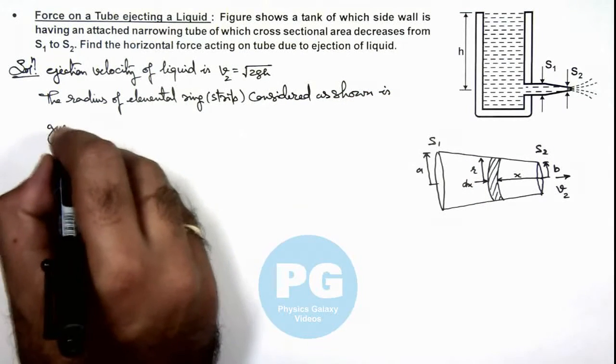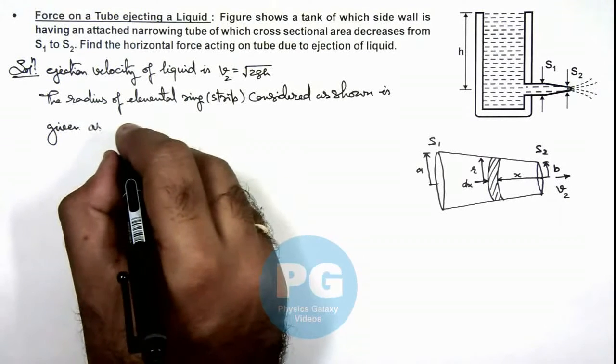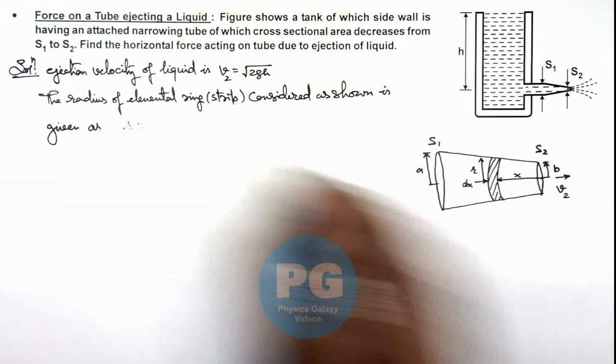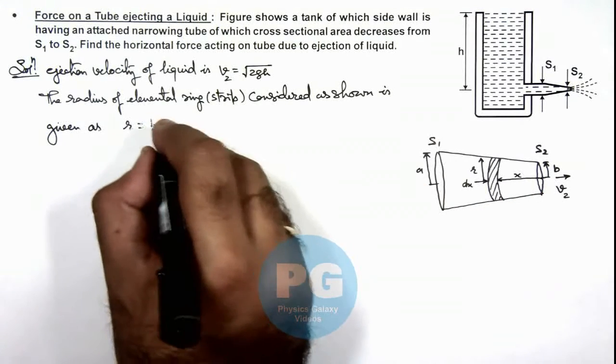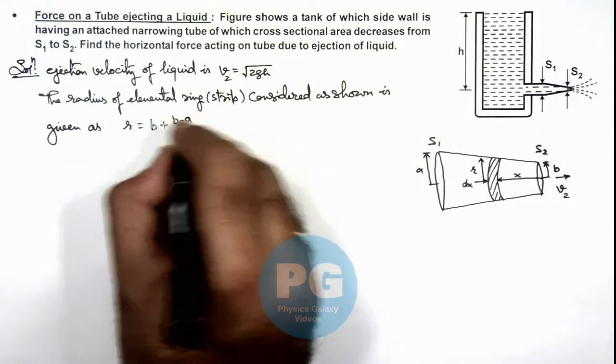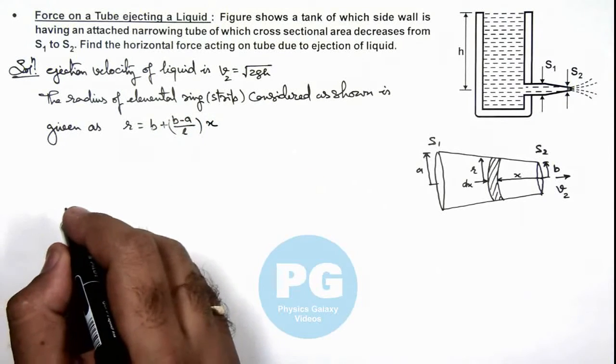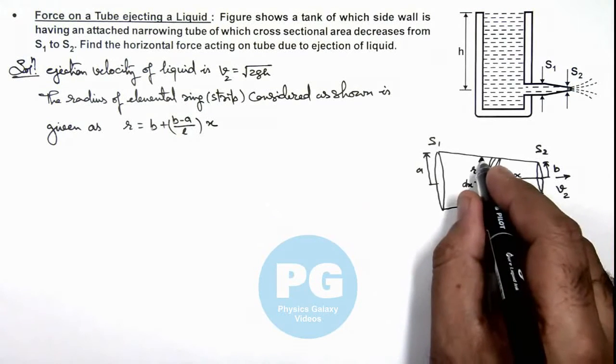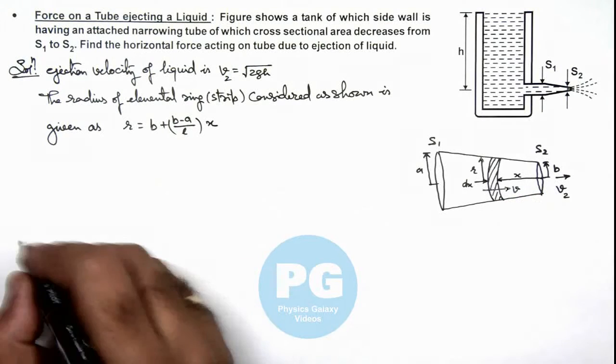This radius can be given as r, and as it is varying linearly from b to a, we can write it as b + (b - a)/l × x. As we have got the velocity, we have got the radius of this section, we can find out the velocity of fluid at this section.